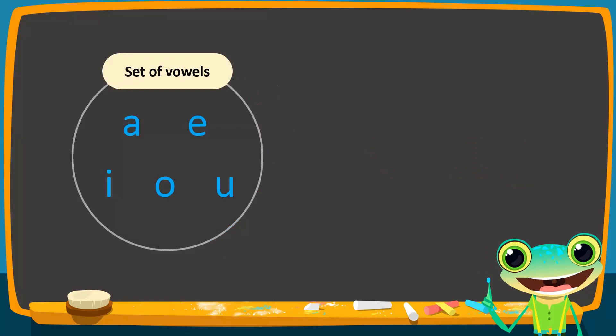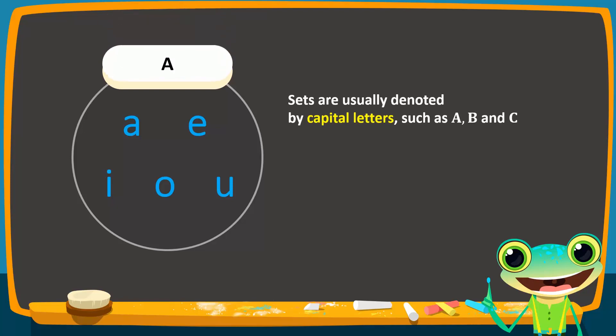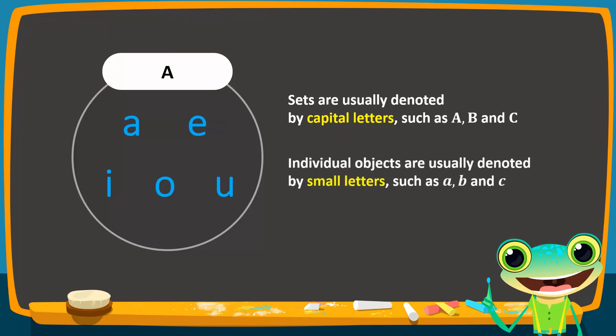Next we will look at the notation of sets using the set of English vowels as an example. When we talk about sets, we normally talk about two things. First, we need to refer to the whole set, and second, we need to refer to individual objects in the set. To denote the set, we normally use capital letters such as A, B, C, and so on. We shall denote this set as A. To denote the individual objects, we usually use small letters such as small a, b, c, and so on.